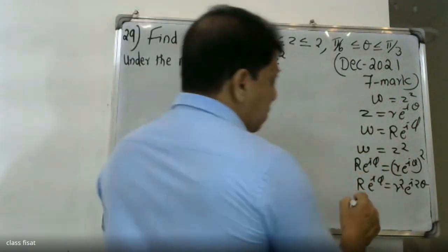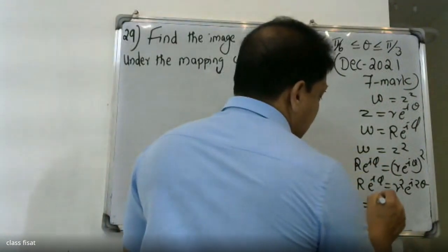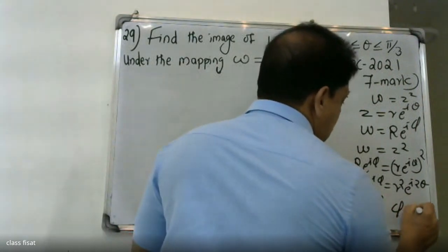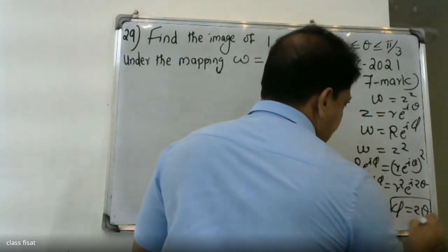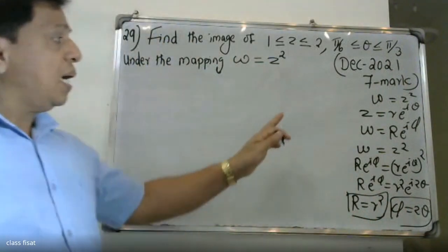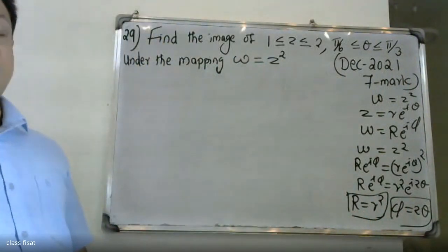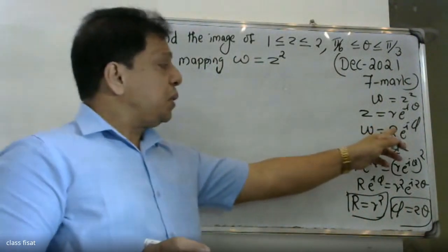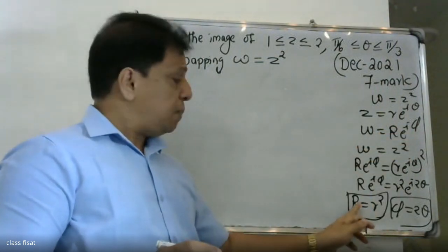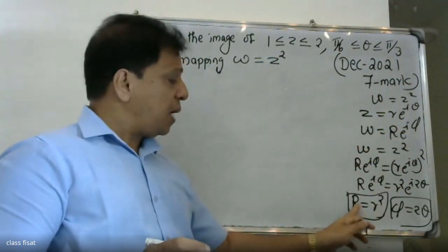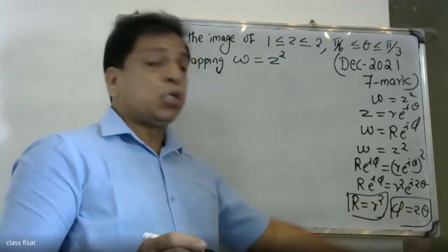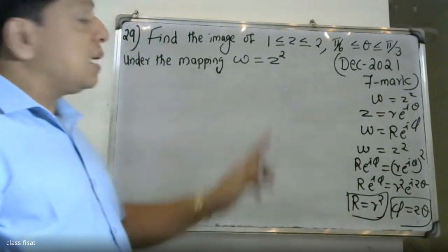Comparing both sides, we get R = r² and φ = 2θ. So the modulus squares and the argument doubles under the mapping w = z².